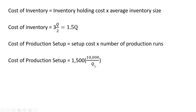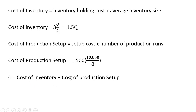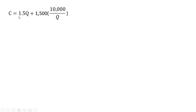For example, if Q is 10,000, the firm does one production run and incurs only one setup cost of $1,500. If we did two production runs of 5,000 each, 10,000 divided by 5,000 gives two production runs, and two runs at $1,500 each equals $3,000 in setup costs. Adding these two costs gives us our total cost equation: 1.5Q plus 1,500 times 10,000 divided by Q, which simplifies with 1,500 times 10,000 in the numerator.